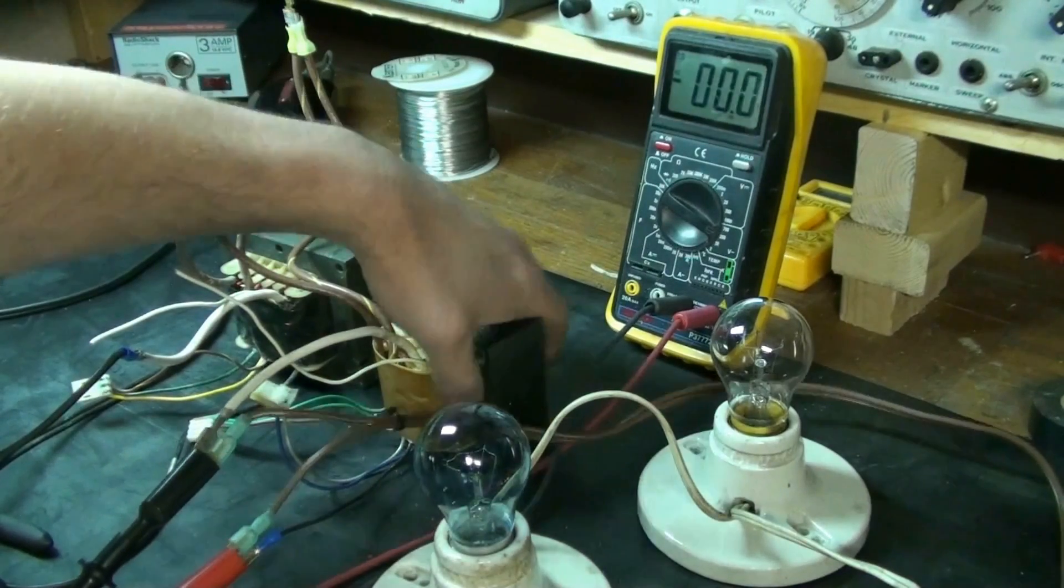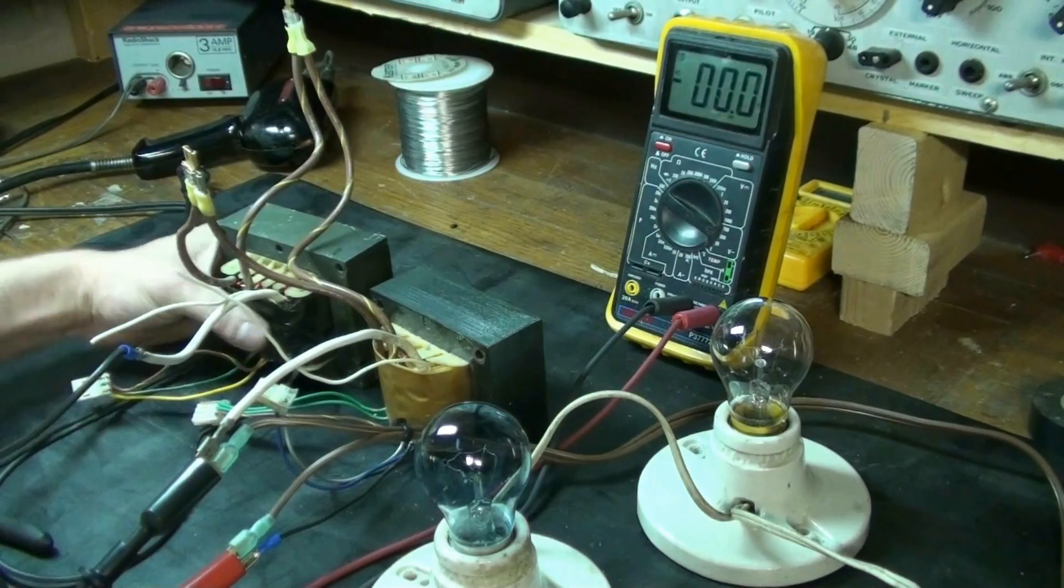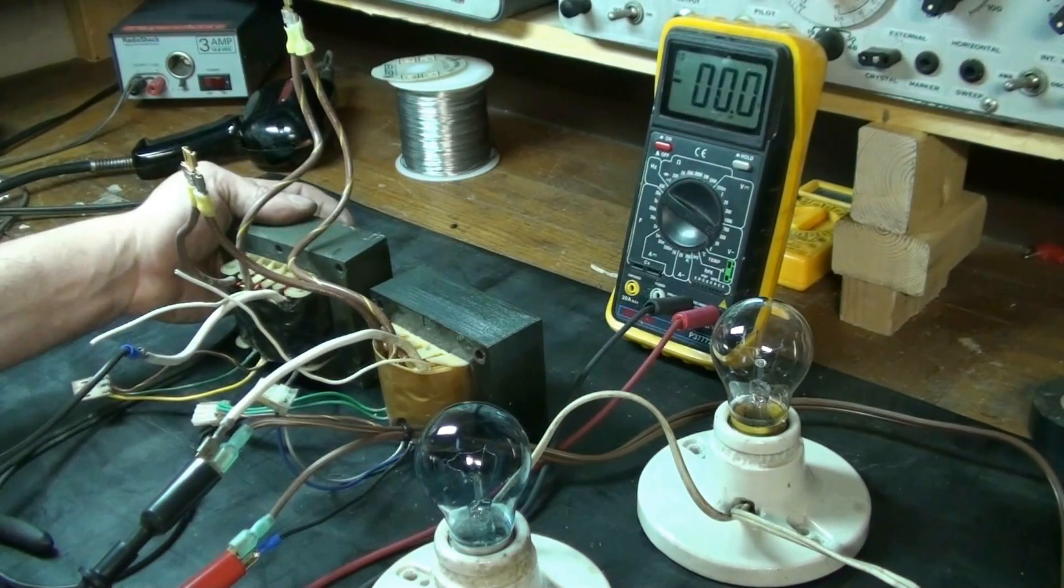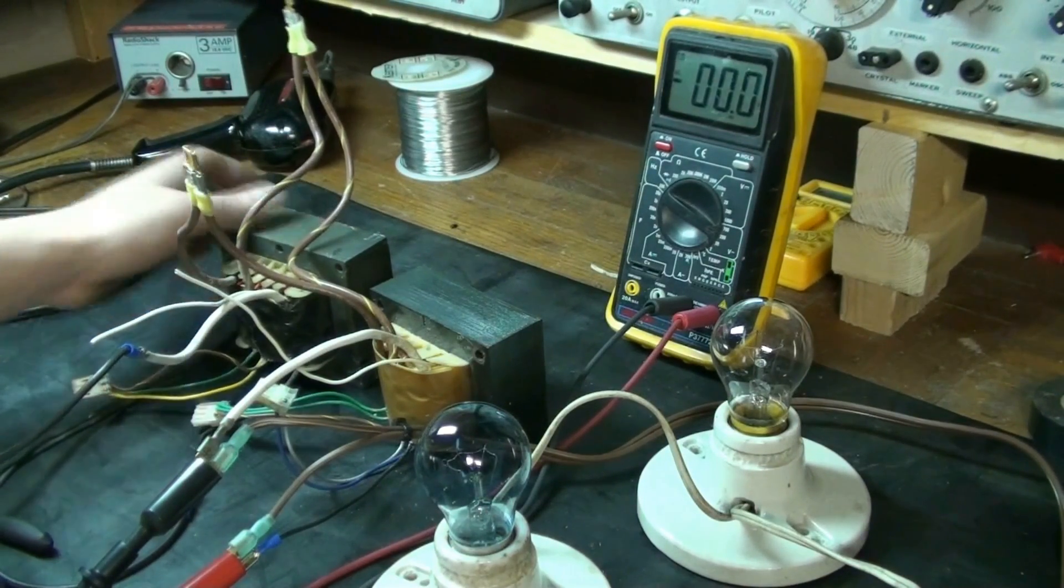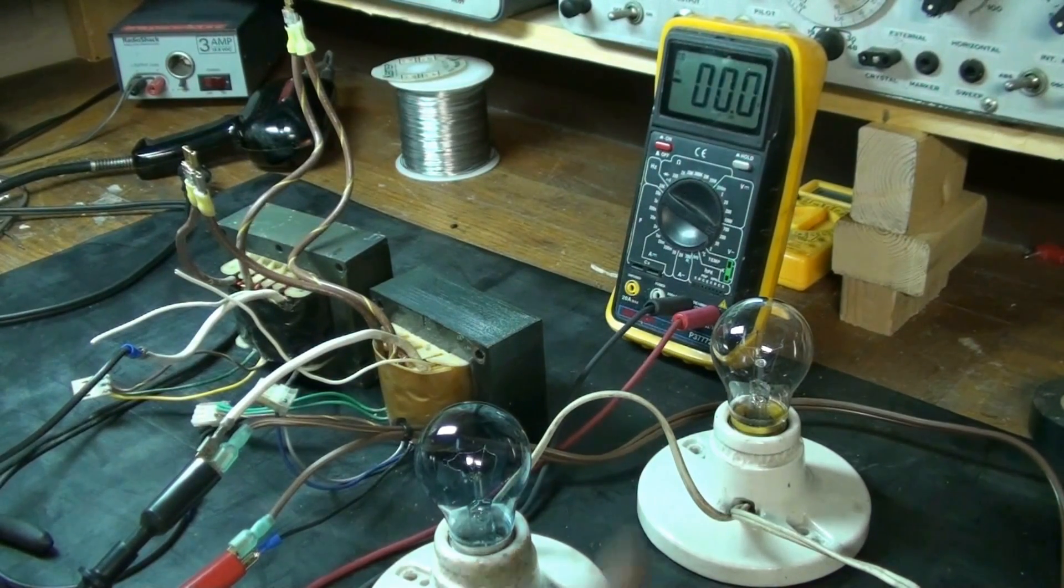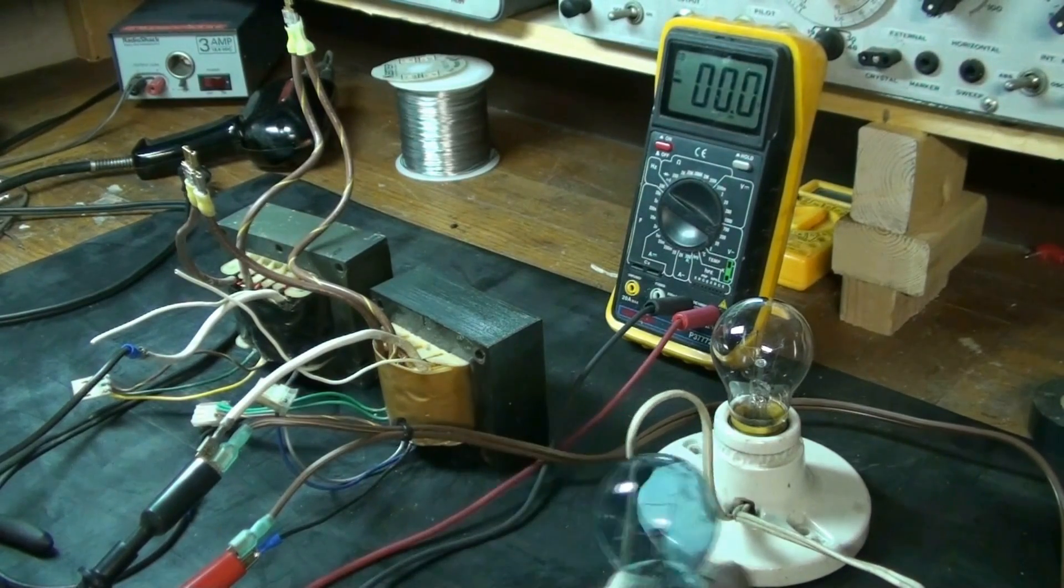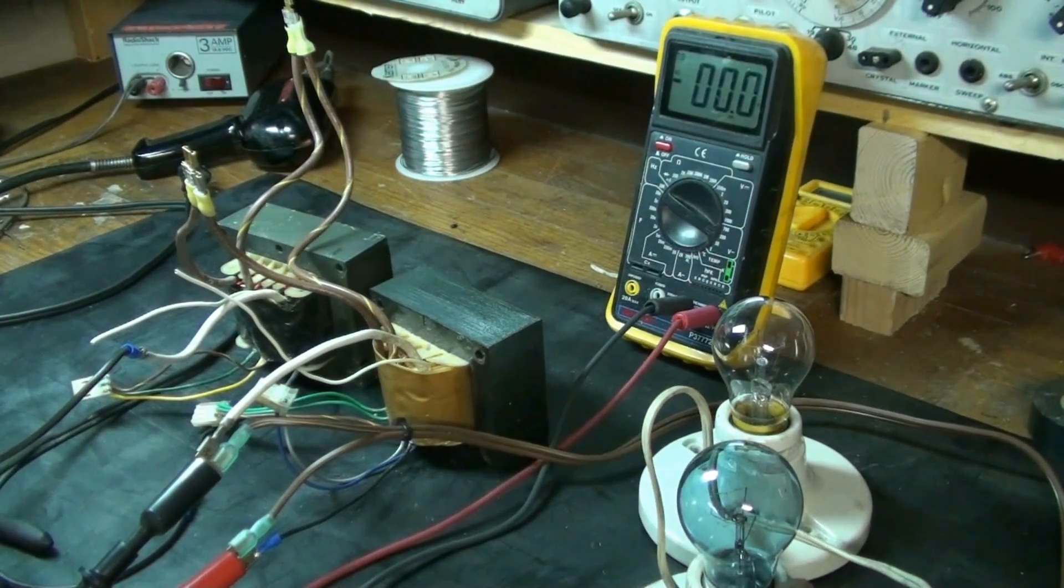So we're back up to 115 volts. Transformer doesn't feel warm at all. So yeah, I'm not exactly sure what a good rating as far as a resistive load would be for an isolation transformer, but it does work.